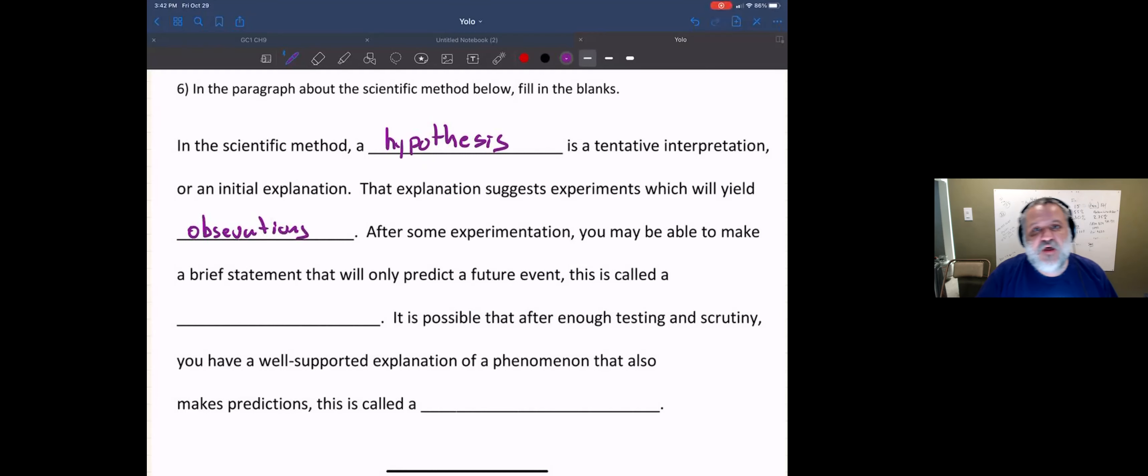This is the best word to include in that particular blank. So a hypothesis is a tentative interpretation, and you can test that tentative interpretation. That's the point of a hypothesis—it's testable. And then in that testing, that experiment that you do, you can make observations.